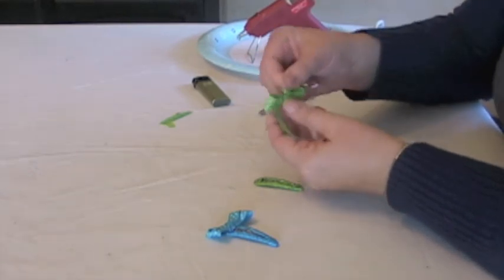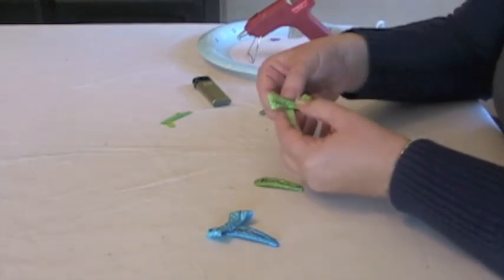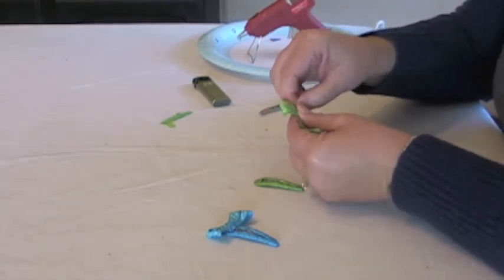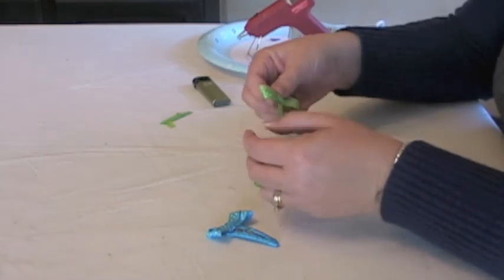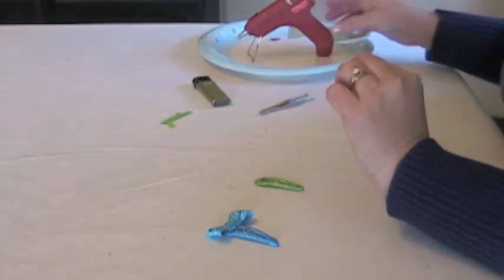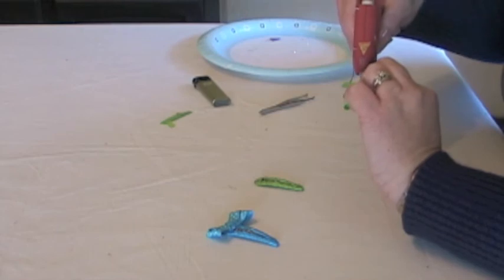Once you have the knot for the center tied, you can hot glue it to the end of the barrette.